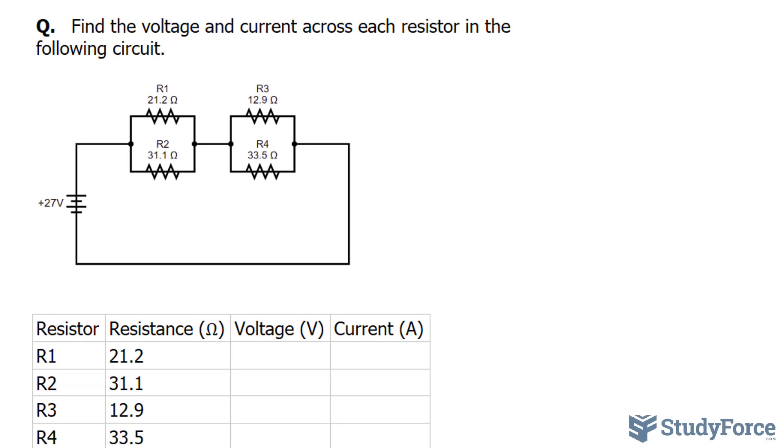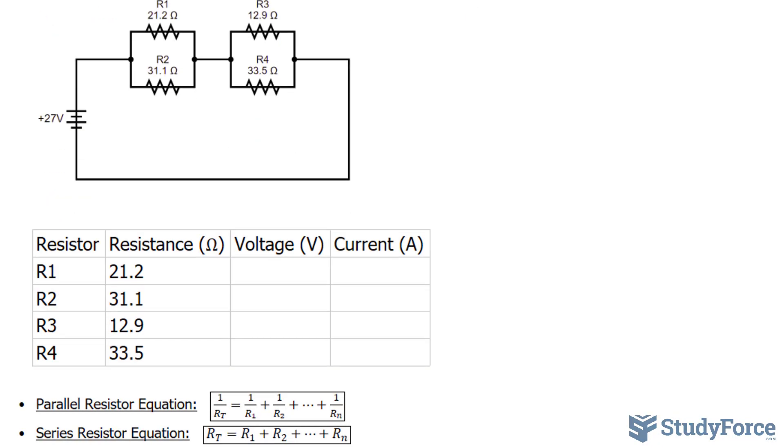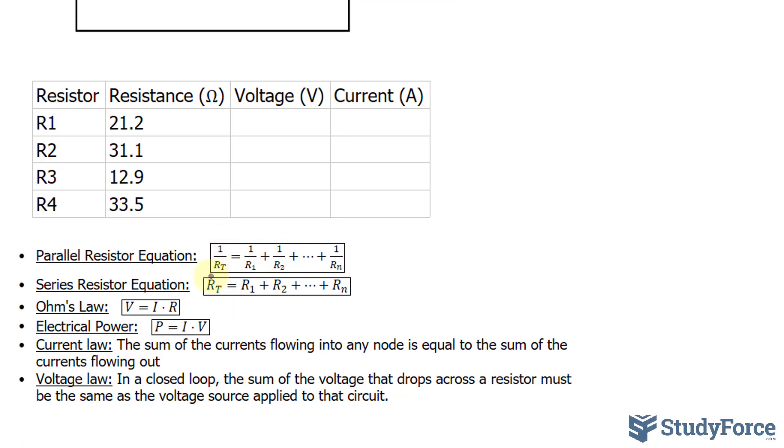As you can tell, we have four resistors labeled R1 through R4, and we have a power source that is 27 volts. When it comes to tackling these types of problems, you need to reduce the circuit down to a simple circuit with one resistor and the power source. And the way we do that is by using the following formulas for resistors that are in parallel and for resistors that are in series.